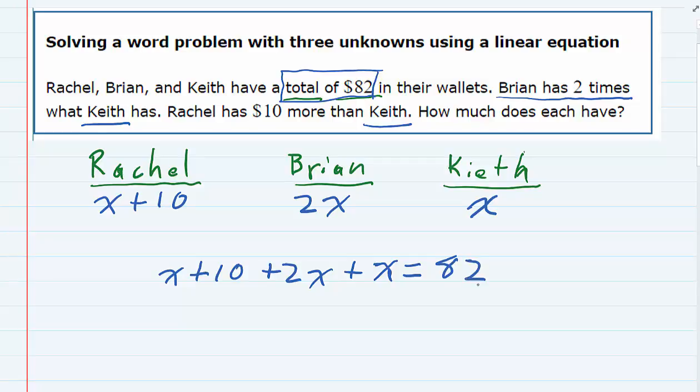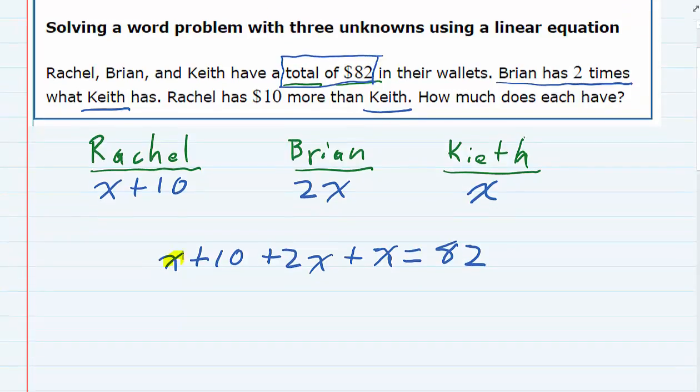So if I add these up, I have some like terms here. The X terms are like, and when I add those, 1X plus 2X plus 1X gives me 4X plus the 10 that is still on the left-hand side equals 82.